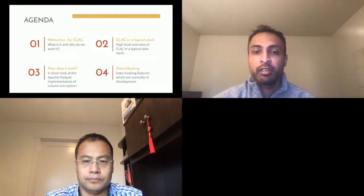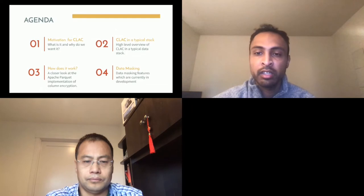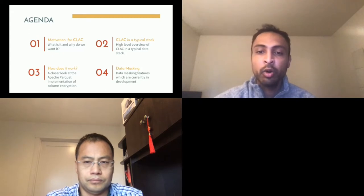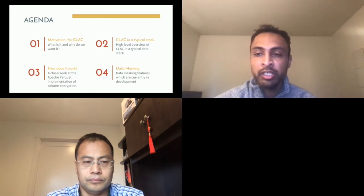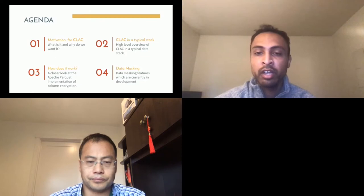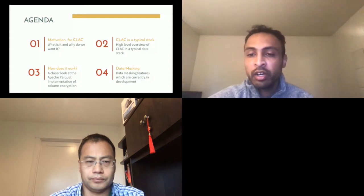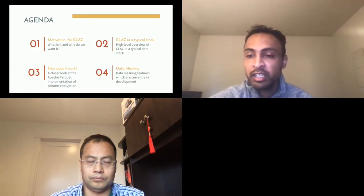Let's go over the agenda. First, we're going to cover the motivation of CLAC — why exactly do we want column encryption and what is it. Next, we'll go over how CLAC fits into a typical stack. After that, we'll take a closer look at how column encryption works, diving into the Apache Parquet implementation and the other systems involved. Lastly, we'll talk about the new data masking feature we're currently working on. This feature is currently in POC phase, but we see data masking as an important feature for the smooth productionizing of column-level access control in an organization.